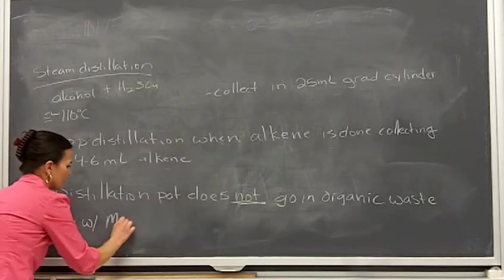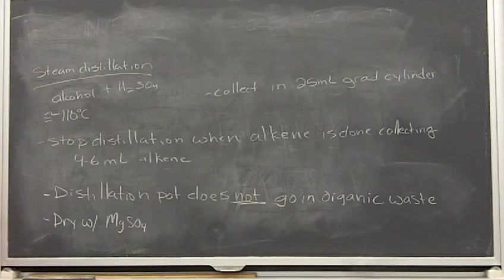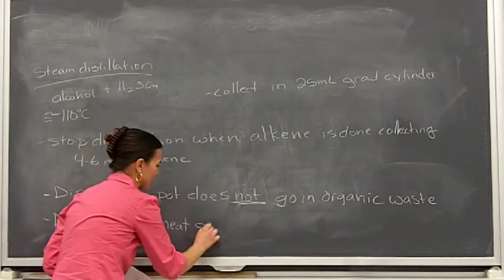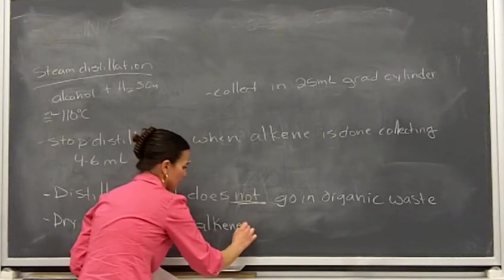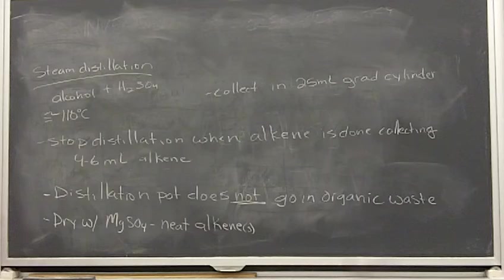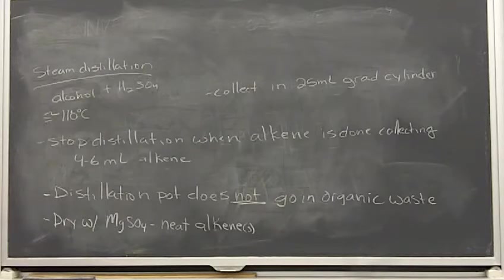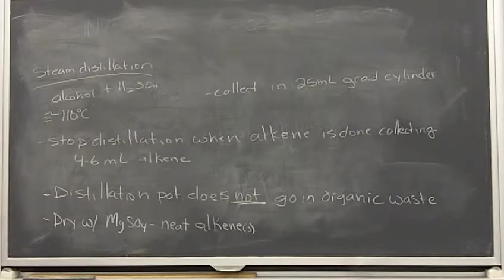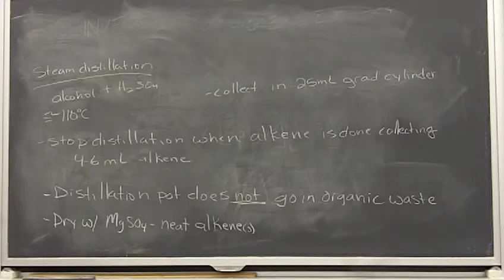Last week our alcohol was still in ether when we added magnesium sulfate. This week you have your neat alkene — it's just alkene, probably a mixture of alkenes, with no solvent. You don't want to use too much magnesium sulfate. Use your small Erlenmeyer flask — you won't need much. Just add what you need: a little clumping with a little free-floating is what you're looking for. Just like last week, swirl it, cover it with saran wrap, and let it sit 10 minutes.